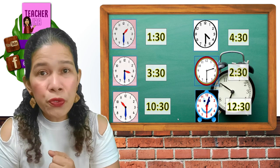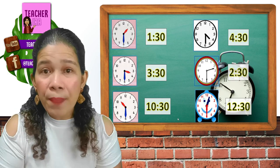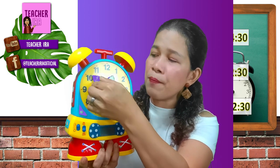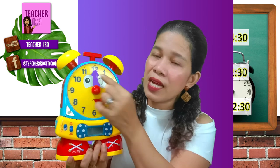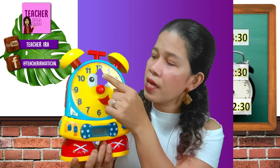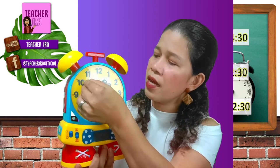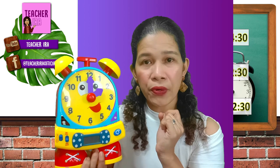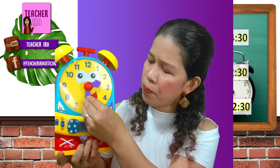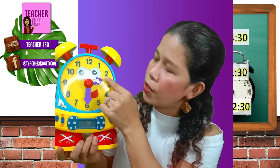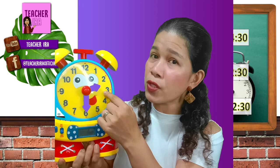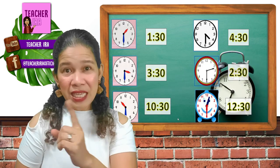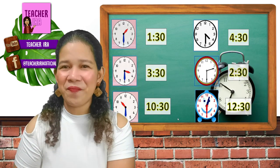You now know how to read time by hour and by half. Remember that it takes one complete turn of the minute hand to reach one hour. Look — the short hand changed. One more complete turn and it changes again, because 60 minutes makes one hour. And if I put the minute hand in the middle at 30, look at the short hand — it's now in the middle of two numbers, because it's past one number but hasn't reached the next.